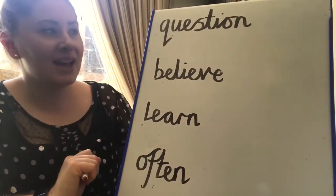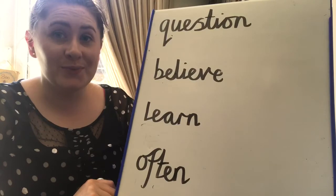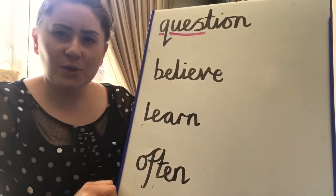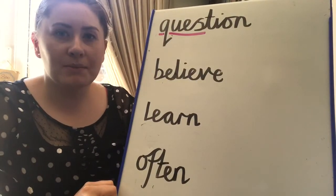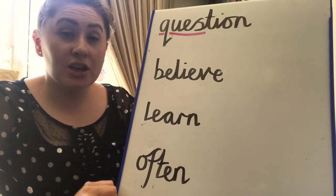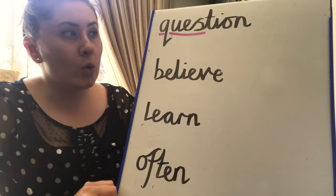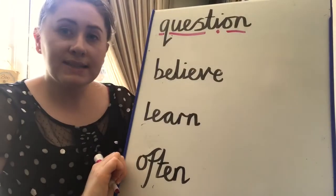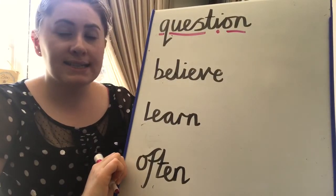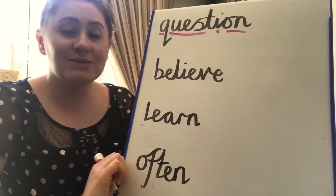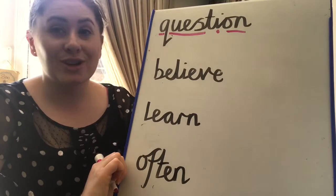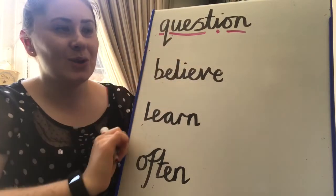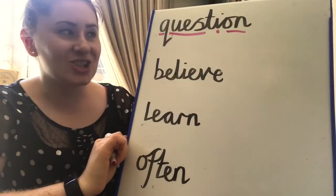Let's start with our top one: question. I can see a word hidden inside — can you? I can see the word quest. Do you know what a quest is? A quest is a search for something — you go on a bit of a journey in search of something. So I can also see I and on. When I think of the word question, I say to myself: quest, I, on. And that helps me with my spelling. I also know that if I've got my Q, what letter needs to go next to it? That's right, my U. Quest, I, on — question. That's my first one.